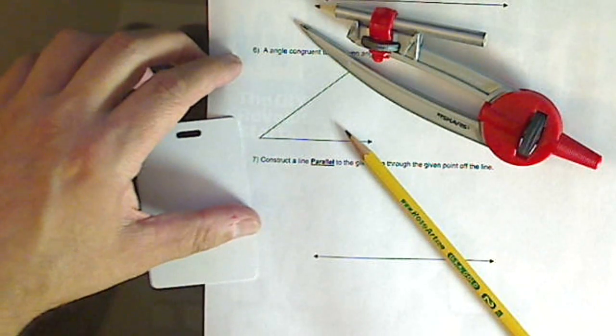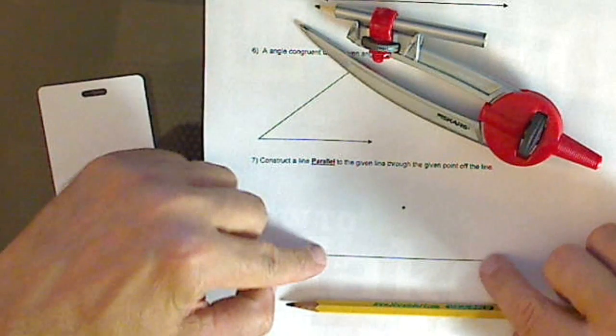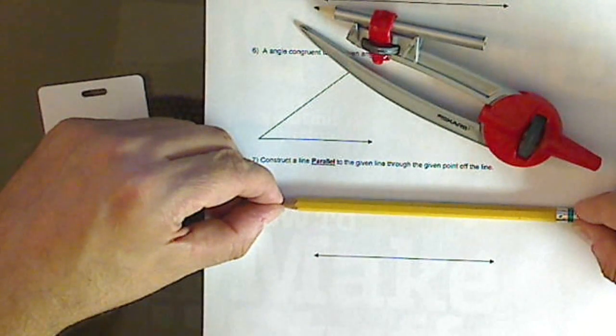Okay, well, we're on our last one. It's number seven. We want to construct a parallel line to this line but through this point, so essentially right where my pencil is.